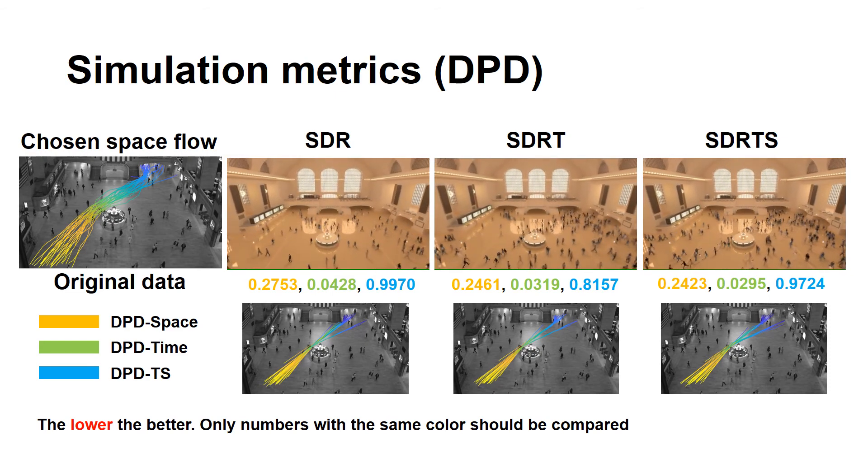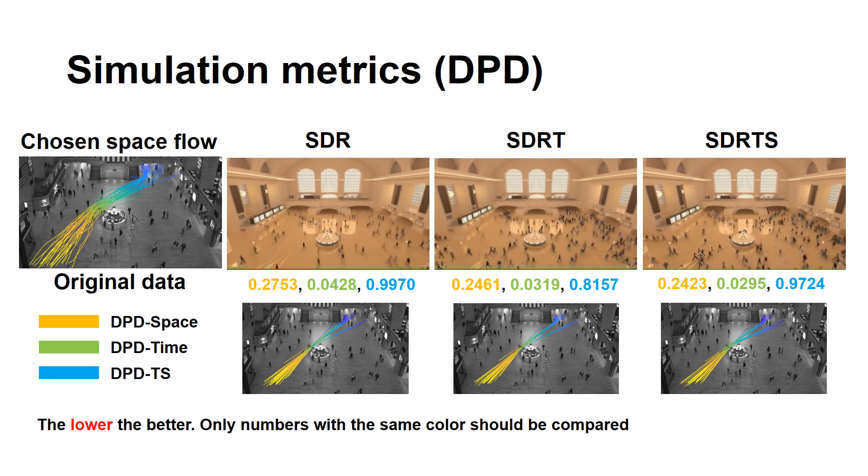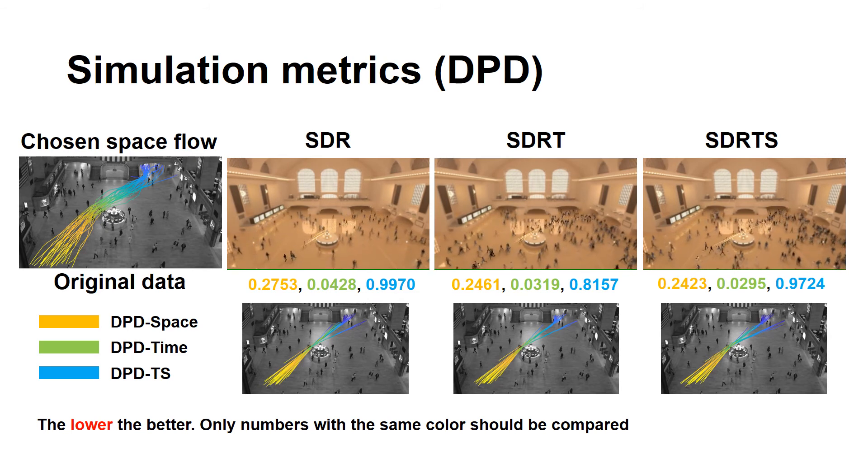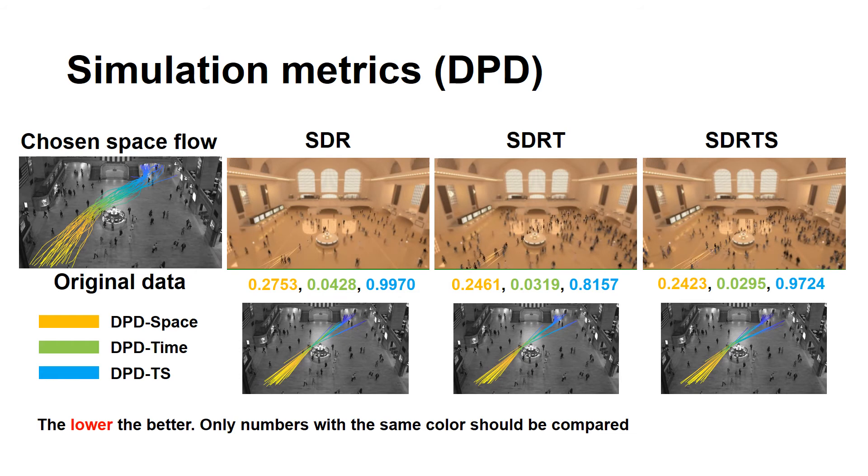Again, SDRTS achieves the best results as it is equipped with the most prior information. Although SDRTS performs the best across board, it is still not ideal. It is easy to spot that all the simulated flows are narrower than the data. This is because there is no motion randomness modeled so that during simulation, no such information was used.